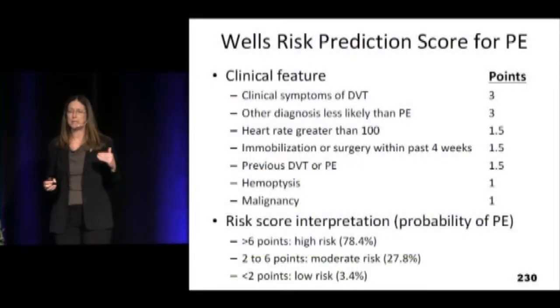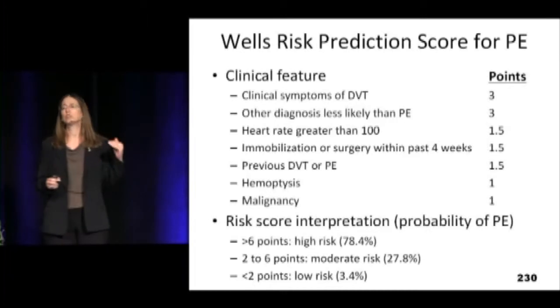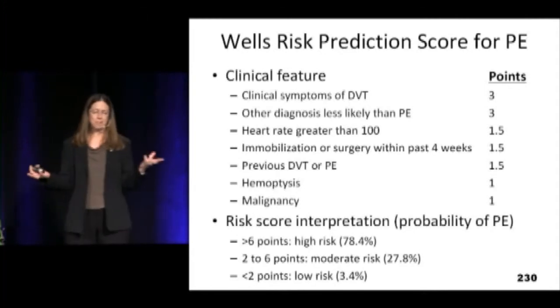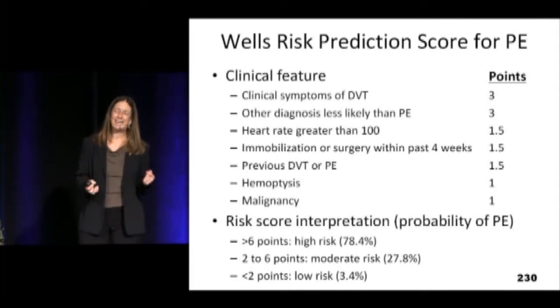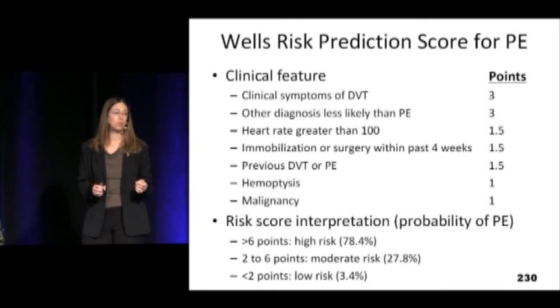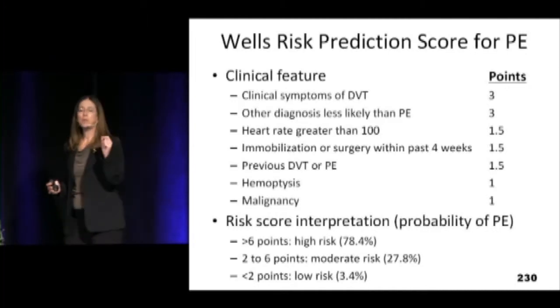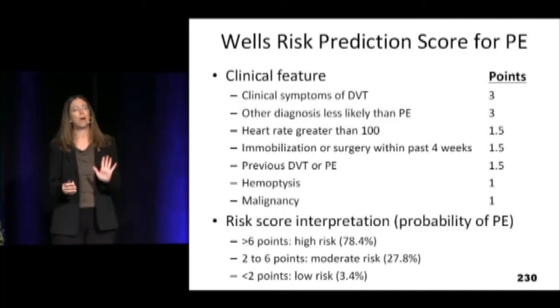What I like to do is use something like the Wells as a risk stratification tool, but then allow my gestalt to trump it. If somebody has a heart rate of 99 and I'm worried about a pulmonary embolism, they might not hit the Wells cutoff, but my gestalt says it's a PE — so let your gestalt trump it, but I recommend using a tool.